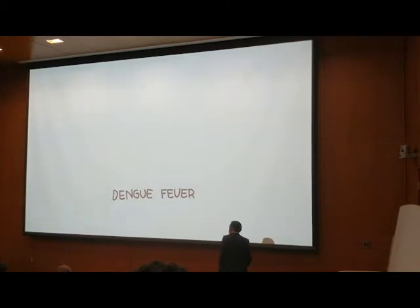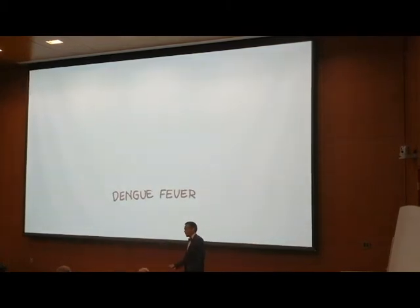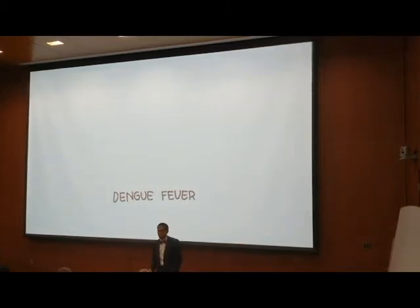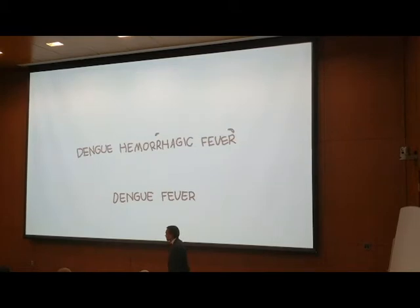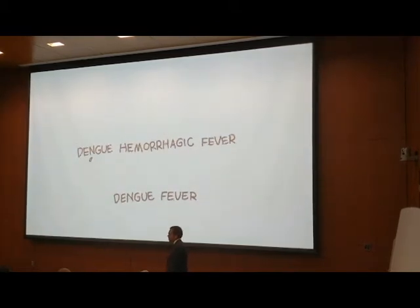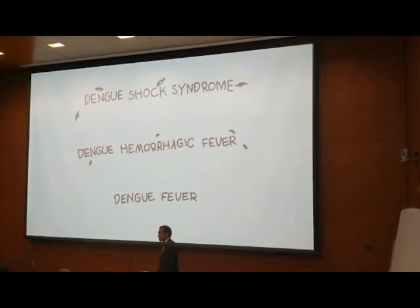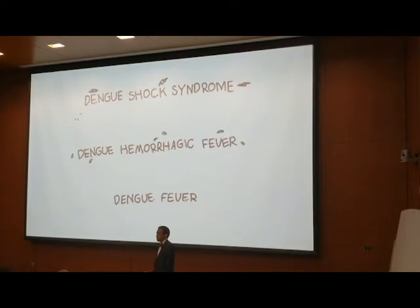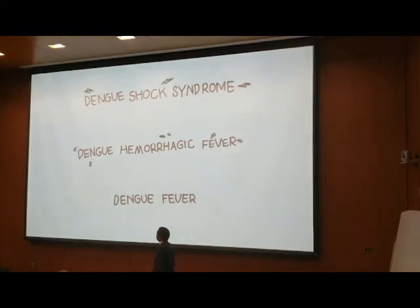There are different categories of Dengue. The first is Dengue fever, known for fever and bone pain. A step above is Dengue hemorrhagic fever, known for capillary bleeds and hemorrhage, which in turn can lead to the worst outcome: Dengue Shock Syndrome.